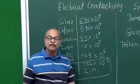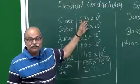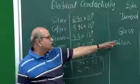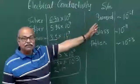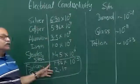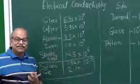10 to the power 11 times smaller conductivity than copper or aluminium or metals. But, if you compare with Teflon, if you compare with glass, if you compare with diamond, plastics, this conductivity is much, much higher. Therefore, they are called semiconductors.